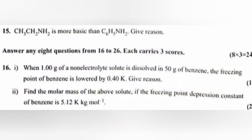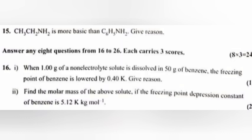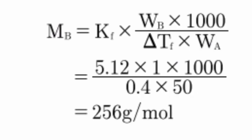Question 16: i) When 1 gram of non-electrolyte solute is dissolved in 50 gram of benzene, the freezing point of benzene is lowered by 0.40K. Give reason. Answer: Due to the colligative property depression in freezing point. ii) Find the molar mass of the above solute if the freezing point depression constant of benzene is 5.12 K kg mol inverse. Answer equals 256 gram per mol.